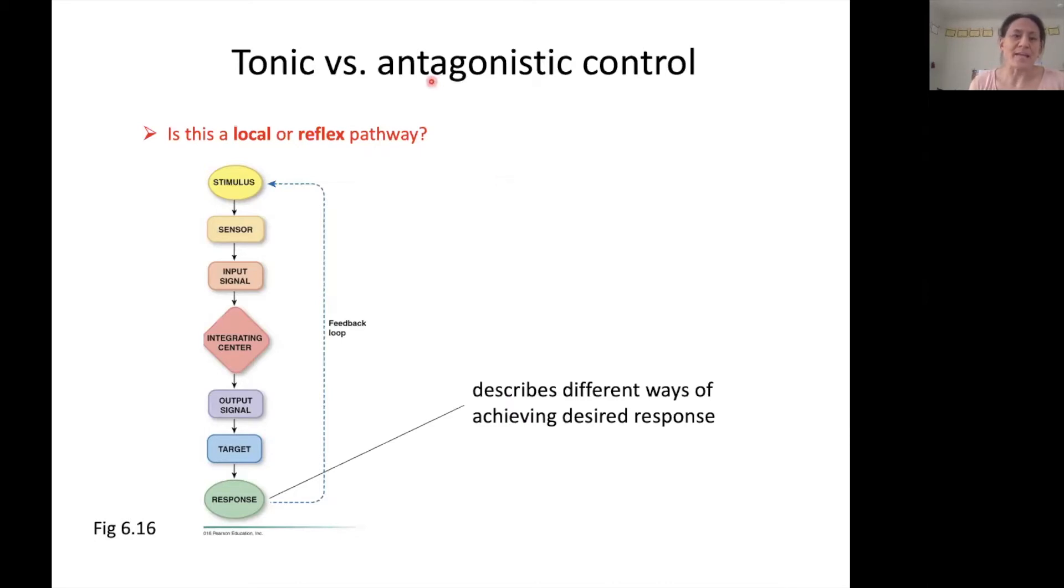Tonic versus antagonistic control has to do with what happens here, basically at the target. Like how do we go about achieving the desired response at the target? So you might remember we were looking at local versus reflex control that had to do with kind of what this whole loop looked like, right? Tonic versus antagonistic control has to do with what happens at the very end.